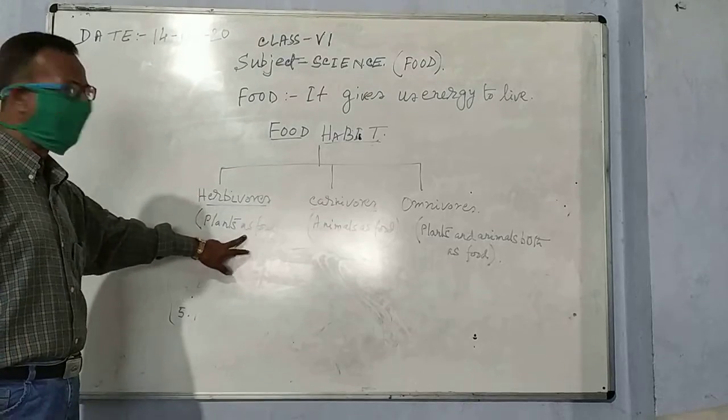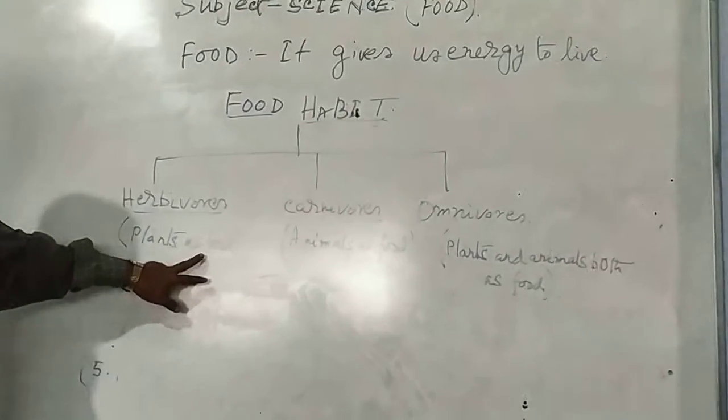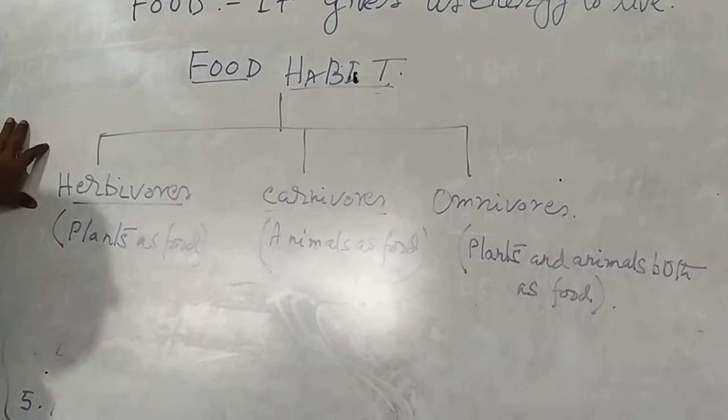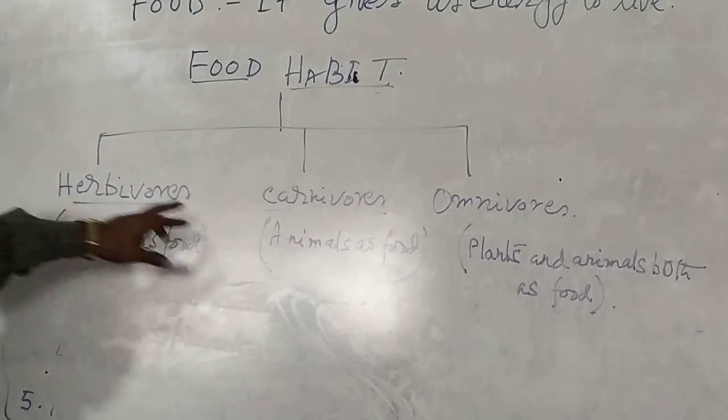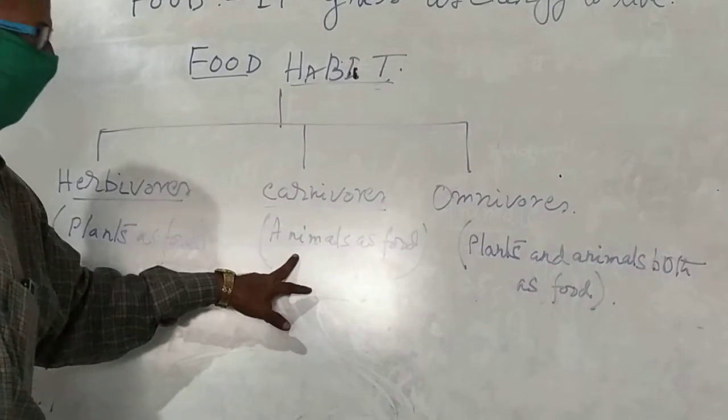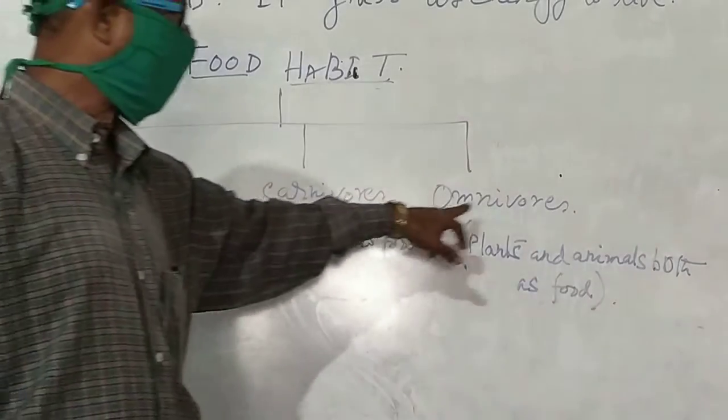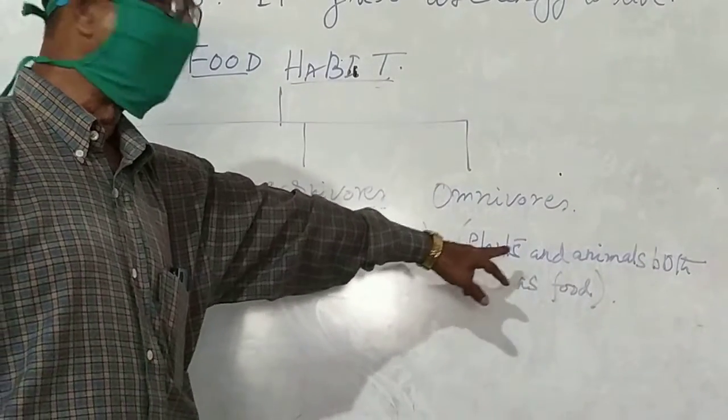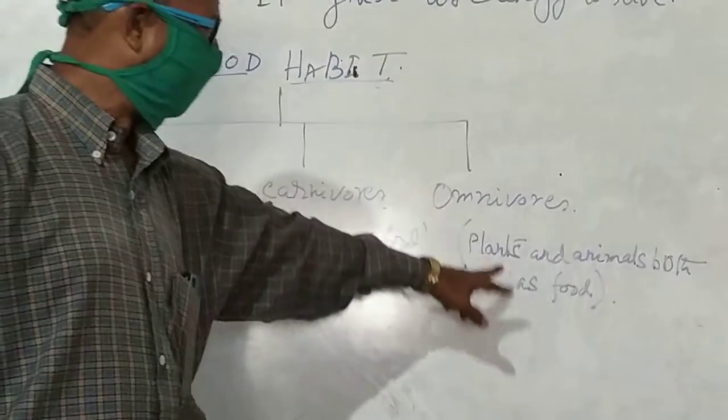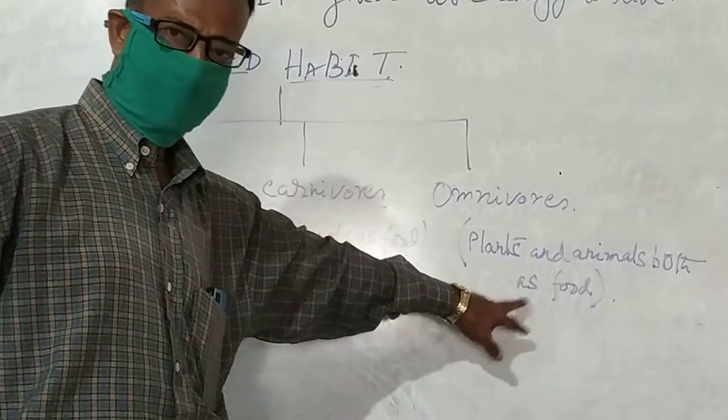Three types of food habitat, who are only taking food plants, they are called herbivores. Who are taking food as animals, they are carnivores. And omnivores, those who take plants and animals both. So human is the group of omnivores.